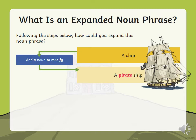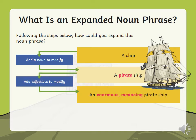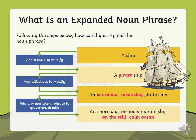First we add another noun to the noun: a ship becomes a pirate ship. Then we add adjectives: an enormous, menacing pirate ship. Menacing is something that's quite threatening or scary. Just by adding two or three extra words it's become a lot more interesting — it creates a picture in your head. Now we add the prepositional phrase, which gives us more details: an enormous, menacing pirate ship on the still, calm ocean. Just by following these three steps, it makes a simple phrase a lot more fun to read, as well as up-levelling your work.